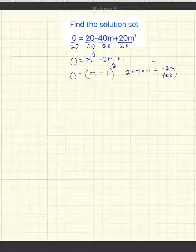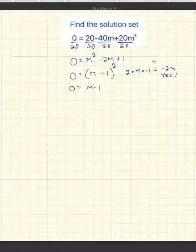Square root of both sides, so the square root of 0 is 0. The square root of m minus 1 squared is m minus 1. And then if I add 1 to both sides, we get 1 is equal to m. So we only have that one solution.